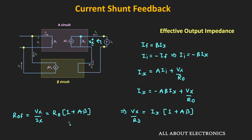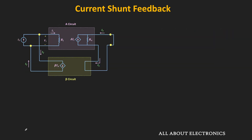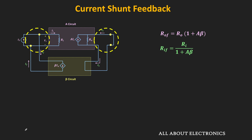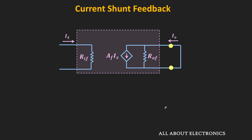So in this feedback amplifier, because of the series connection on the output side, the output impedance is increasing, while because of the shunt connection on the input side, the input impedance is reducing. This is the equivalent circuit of the current feedback amplifier, where RIF and ROF are the input and output impedance of the amplifier with feedback, and AF is the current gain of the amplifier with feedback. The reduction in input impedance and increase in output impedance is a desired thing for the current amplifier.